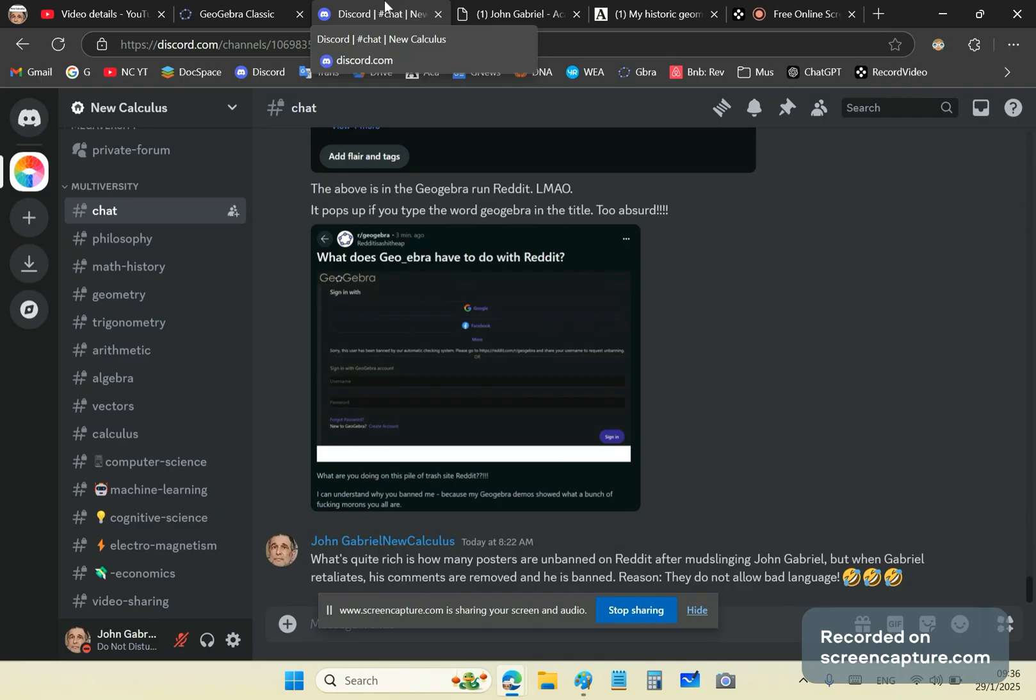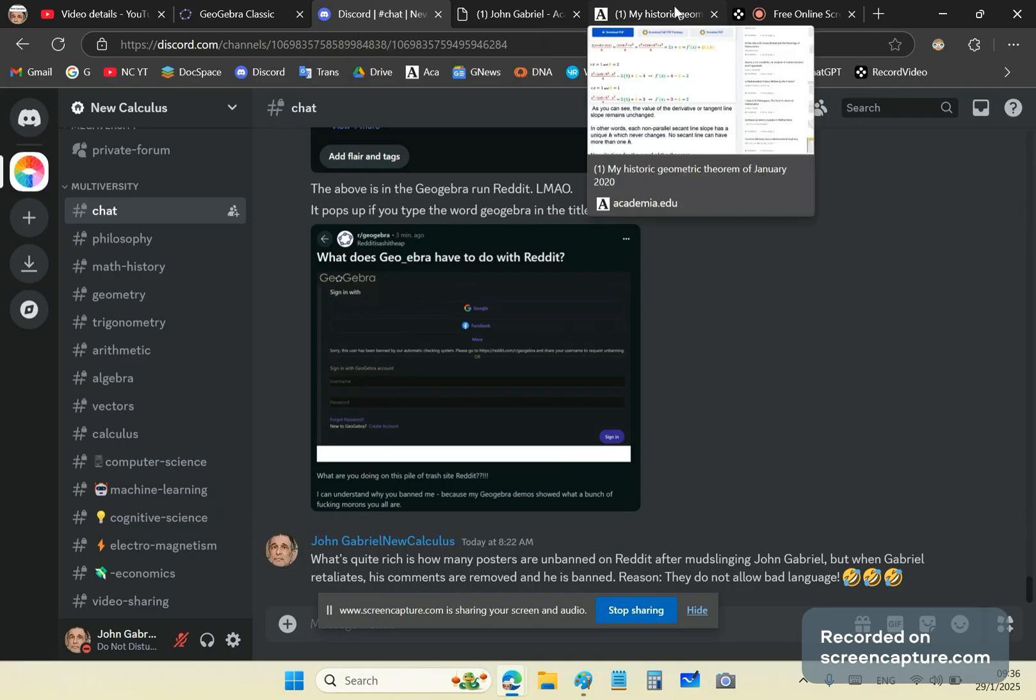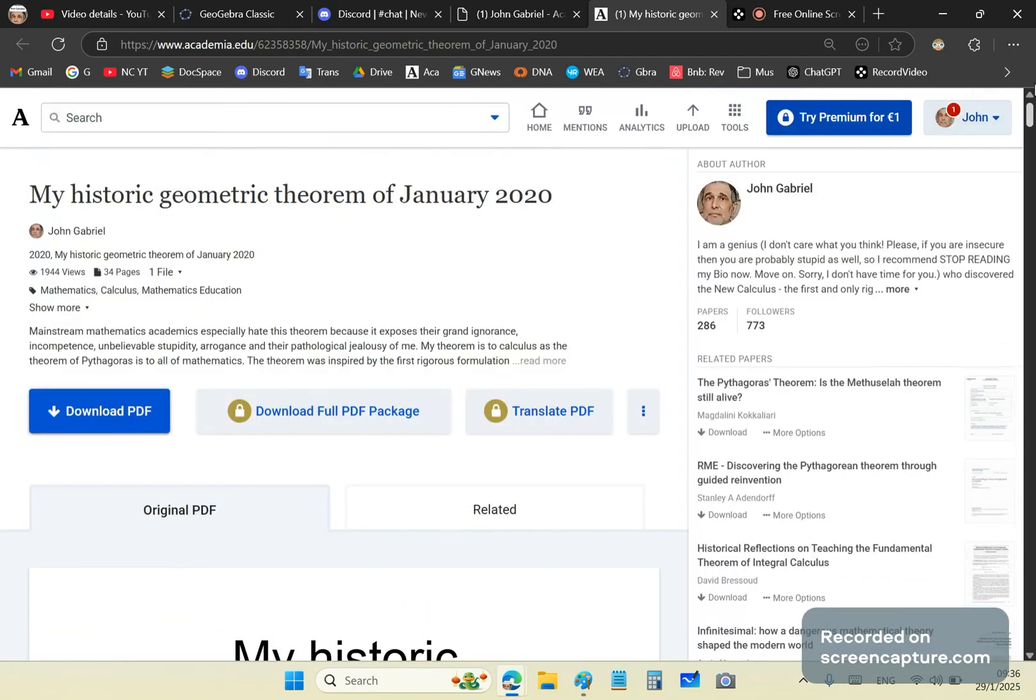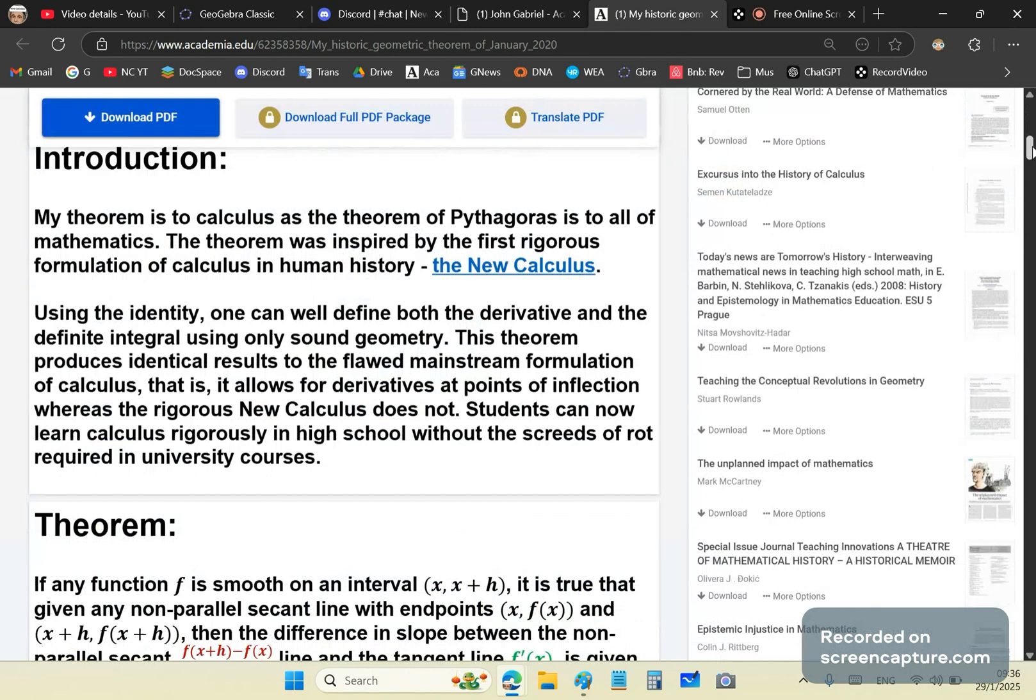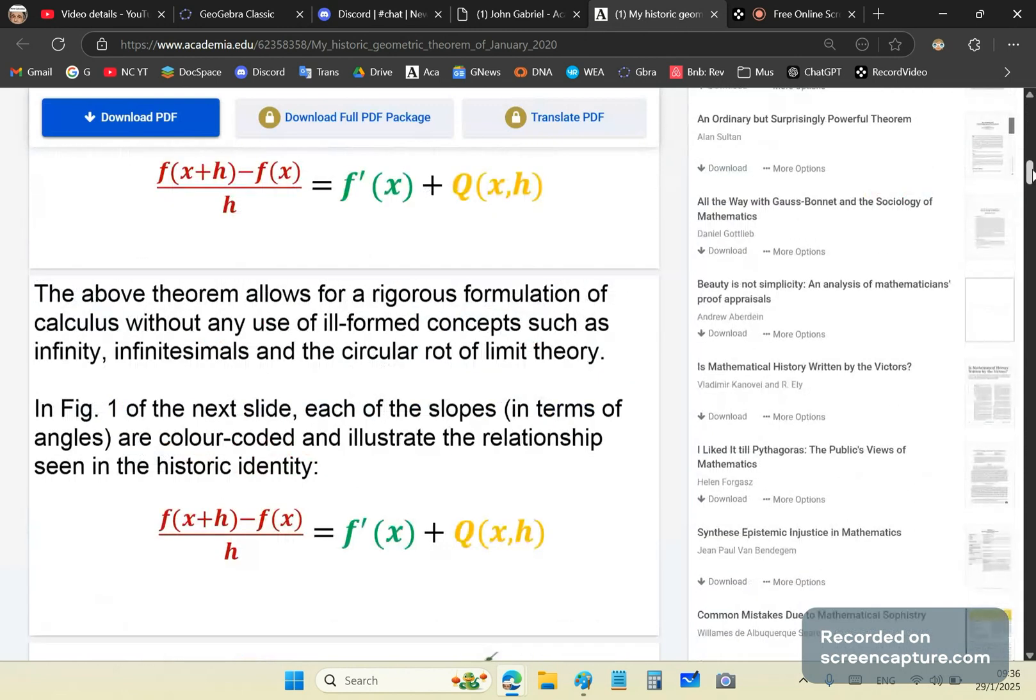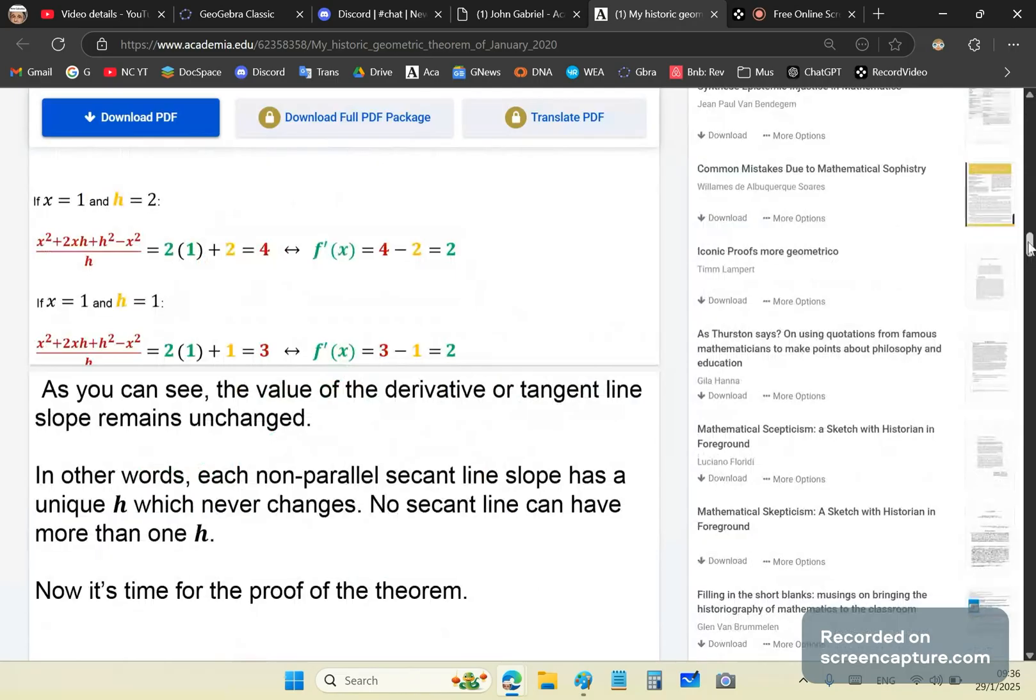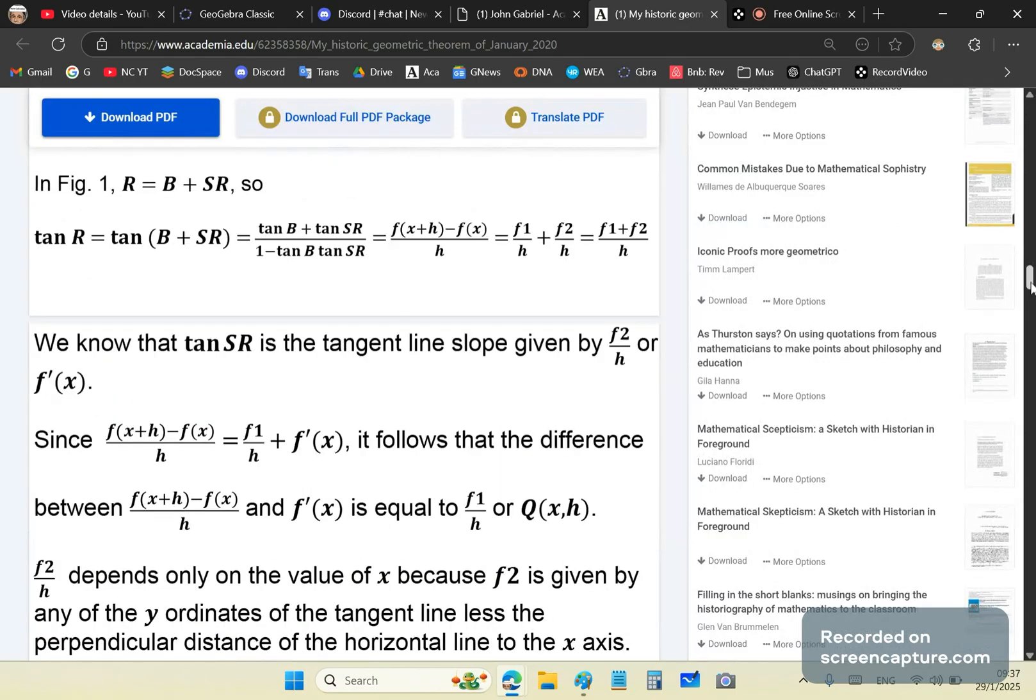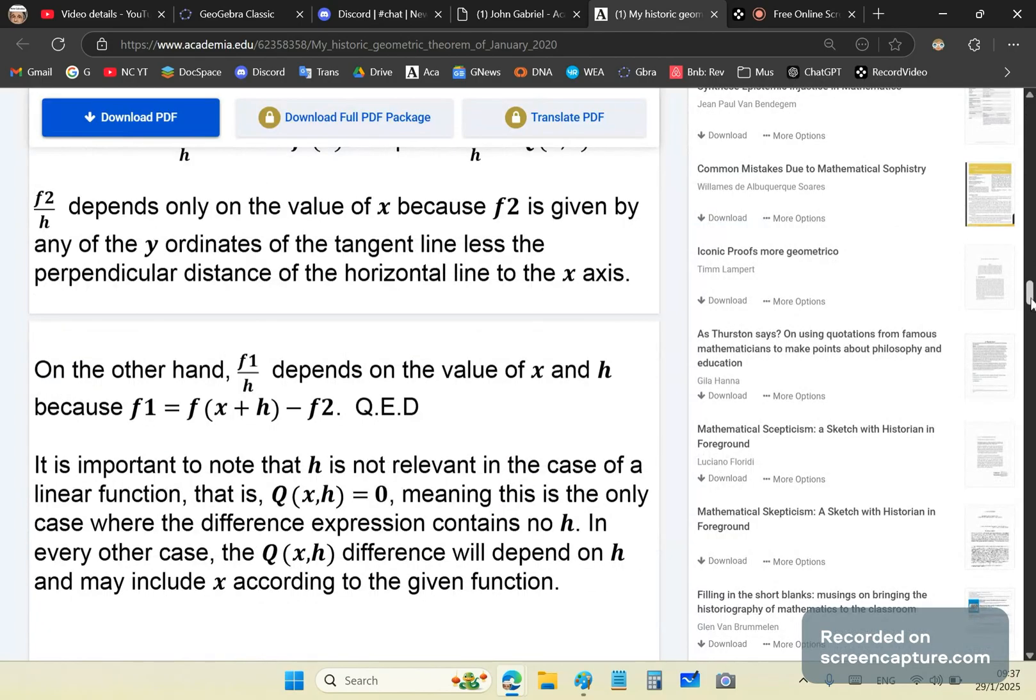But so anyway, let me show you once again that my historic geometric theorem, which is explained in this article, to which I'll place a link, applies to all functions that are smooth over a given interval. This stuff, it's not something that you can question, you stupid morons. It's a theorem, it's fact. It doesn't matter whether you agree or not. Your agreement is irrelevant. You're all baboons compared to my intelligence. And I'm sorry I need to be mean, but you're idiots and idiots need to know their place.